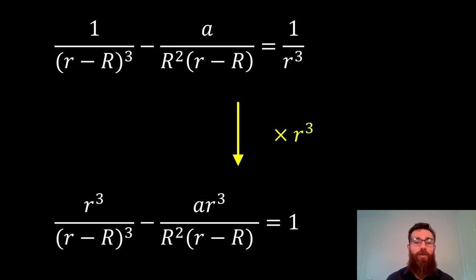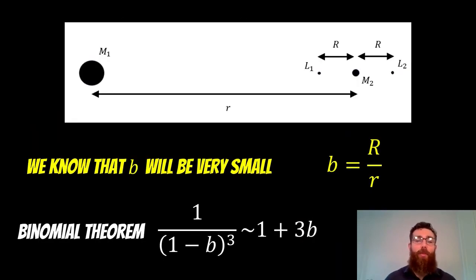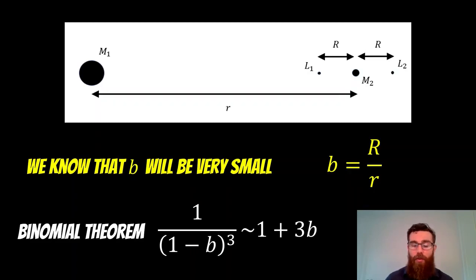Multiplying through by R³ gives 1 on the right-hand side, making it easier to work with. We're now left with just two distances, and similarly to how we eliminated the masses, we introduce a distance ratio B = r/R. The equation then only contains A and B. Since the separation of the two larger masses is considerably larger than the Lagrange point distance from M2, B is very small, so we can use the binomial theorem to approximate 1/(1−B)³ ≈ 1 + 3B.